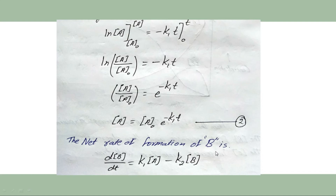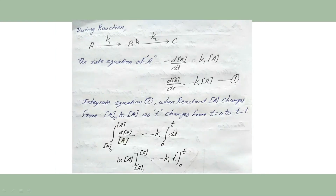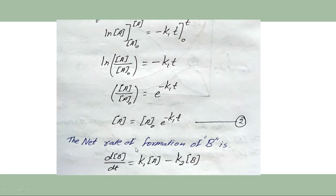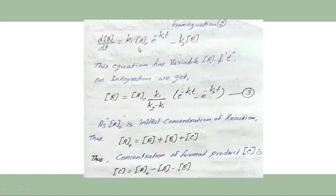The net rate of formation of B is given by: d[B]/dt = K1[A] − K2[B], since B increases due to the first reaction and decreases by the second reaction. Substituting [A] from equation 2, we get d[B]/dt = K1·A₀·e^(−K1T) − K2[B]. Integrating this equation and simplifying gives equation 3: [B] = (A₀·K1/(K2 − K1)) · (e^(−K1T) − e^(−K2T)).